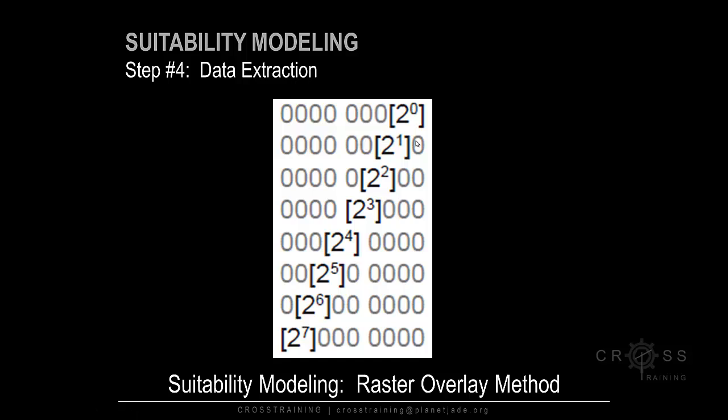The value is calculated like this: the base is always two because it's either on or off — only two choices. The position is the power. In binary we always start with zero, so we have two to the zero, two to the first, two to the second, third, fourth, fifth, sixth, seventh. There are eight positions starting with zero, so we go zero through seven.